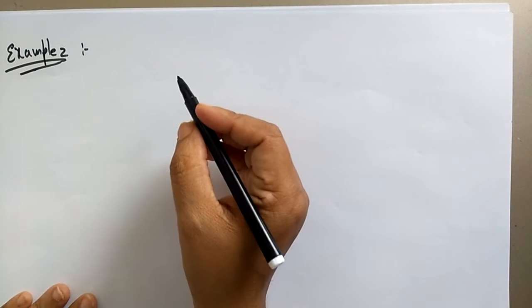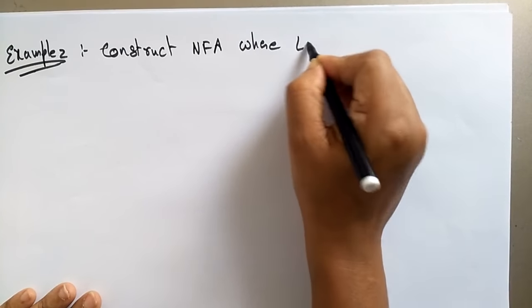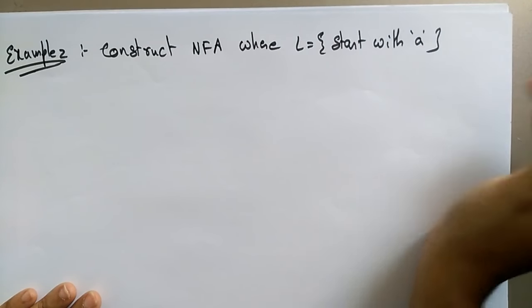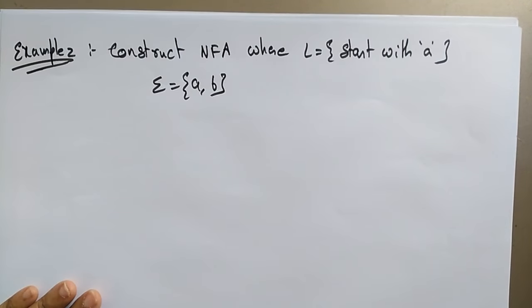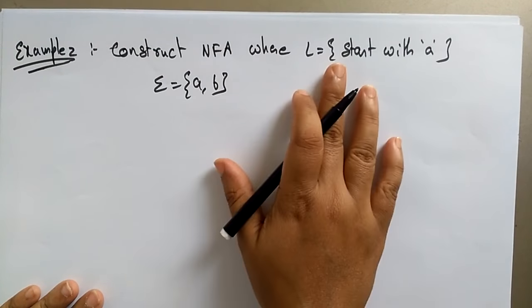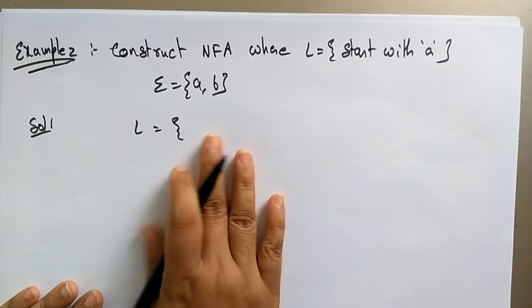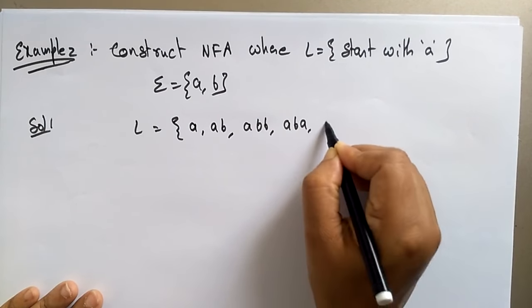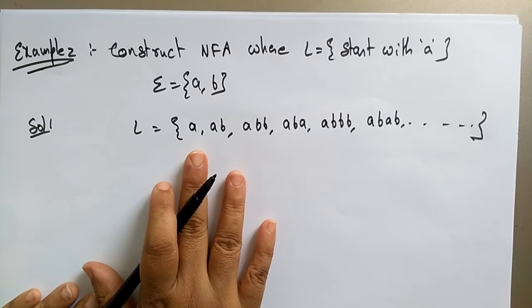Example two: they give the question as 'construct a non-deterministic finite automata where the language starts with a.' The input symbols sigma equals {a, b}. The set of input symbols are a and b, and the language must always start with a. The language starts with a and ends with whatever it may be — ab, aba, abbb, abab, and so on. The minimum length of a string starting with a is one.